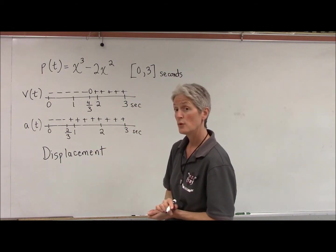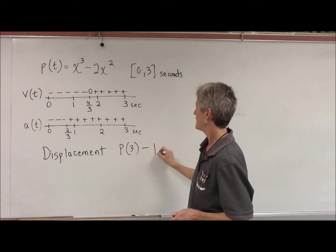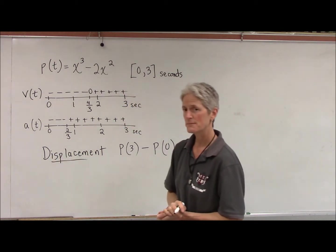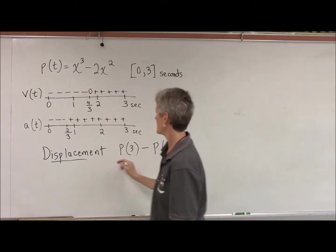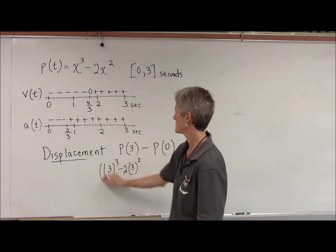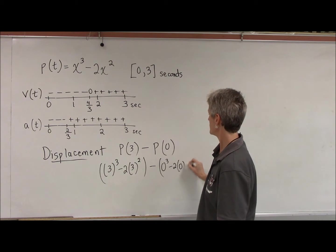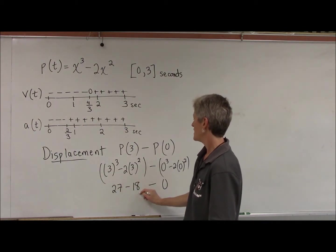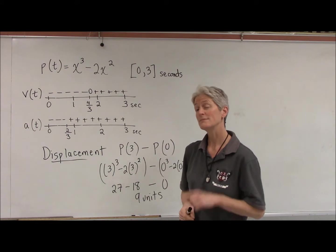The displacement would be the position where this particle was after 3 seconds minus the position where it was at the beginning, 0 seconds. So let's find the displacement. The particle at 3 seconds was at 3 cubed minus 2 times 3 squared, and the particle at 0 seconds was at 0 cubed minus 2 times 0 squared, which is 0. That gives us 27 minus 18, so 9 units is the displacement. Displacement can be positive or negative, so keep that in mind.